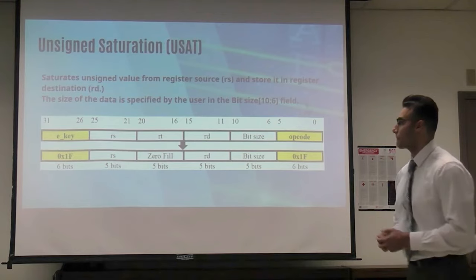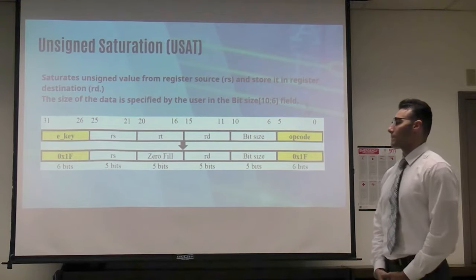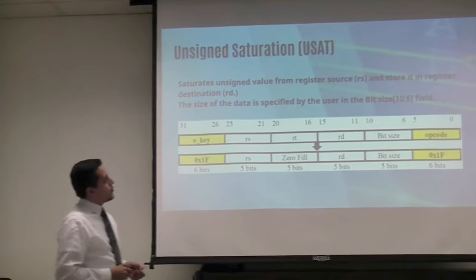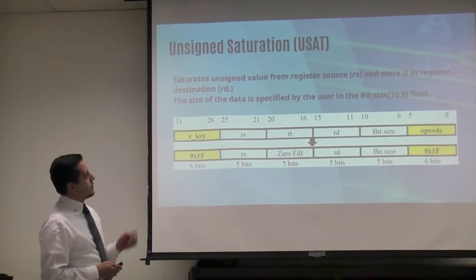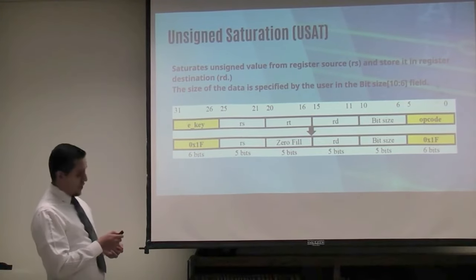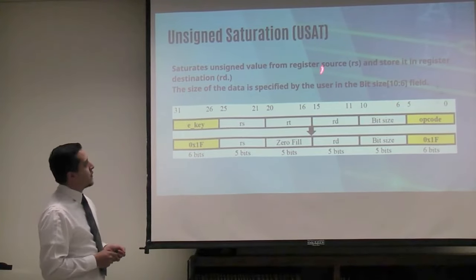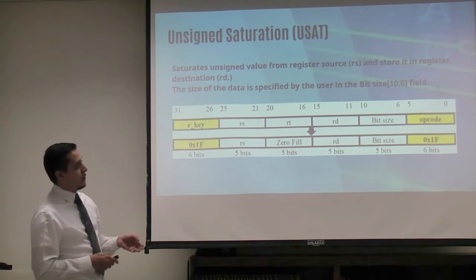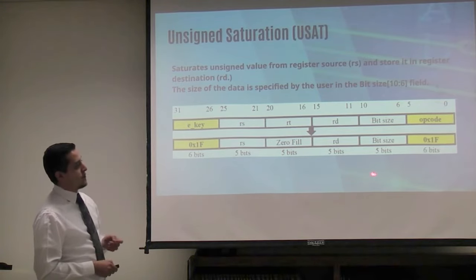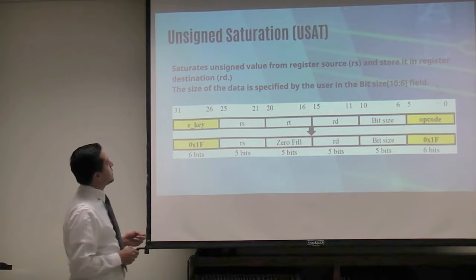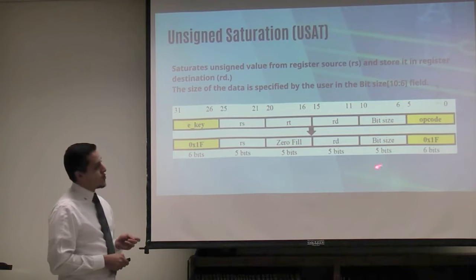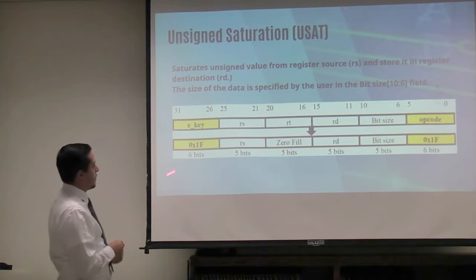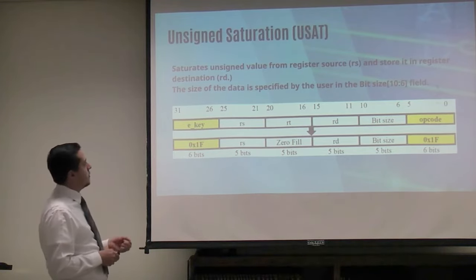This is our unsigned saturation operation. We use the value stored in register RS and saturate it according to the value specified in the bit size field. For this operation, we use an opcode of 1F. Here is the E-type encoding.